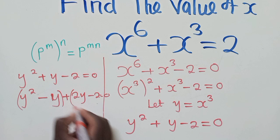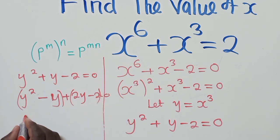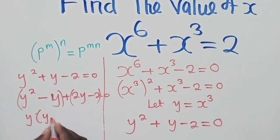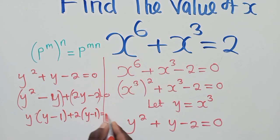So we group or we factorize by grouping here. We shall have y open bracket y minus 1, and here we shall have 2 times y minus 1 is equal to 0. So if you don't know how to solve quadratic equation, please review my videos on how to solve a quadratic equation by factorization.